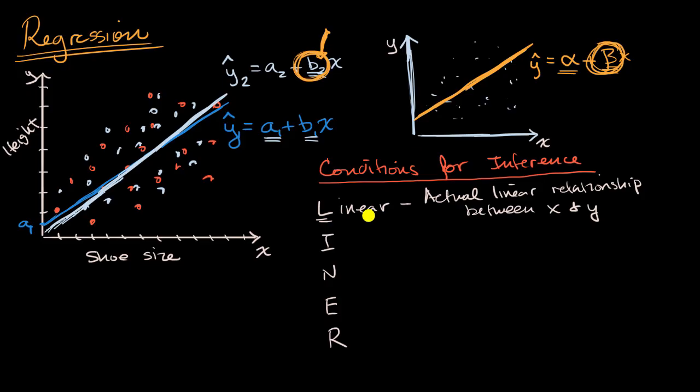They might say, hey, assume this condition is met. Oftentimes, they'll say, assume all of these conditions are met. They just want you to maybe know about these conditions. But this is something to think about. If the underlying relationship is non-linear, well, then maybe some of your inferences might not be as robust.